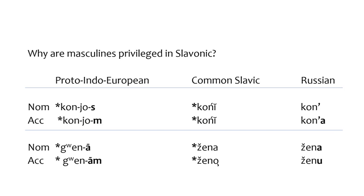The morphological systems we've touched upon in this session emerged as a result of the historic development of these languages. One may reasonably ask why masculine entities play such a prominent role in the grammars of these languages. An exhaustive answer transcends the scope of this lecture, but I will leave you with one interesting tidbit about the historic trajectory of Slavonic nouns. On the screen you see the late Proto-Indo-European and Common Slavic reconstructions of the words for horse (masculine) and woman (feminine), in nominative and accusative. Common Slavic is the ancestor language of all contemporary Slavic languages.